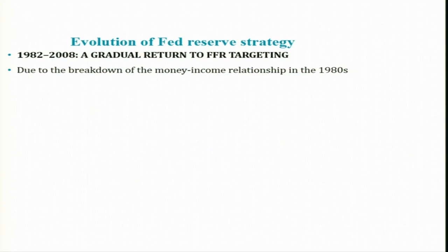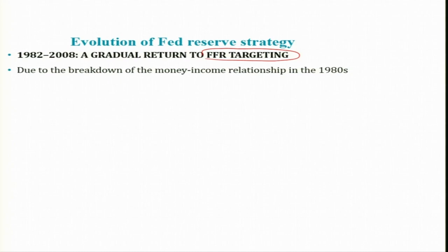Between 1982 and 2008 there was a gradual return to Fed funds rate targeting. During this period, the Fed was also following a kind of implicit anchoring — not really highlighting it, though they were using Fed funds rate targeting — following an implicit anchor without using an explicit nominal anchor, for example not highlighting the FFR as the nominal anchor. Whenever new information came in, and depending on the situation in the economy, they followed some implicit anchor in order to achieve the final outcome.